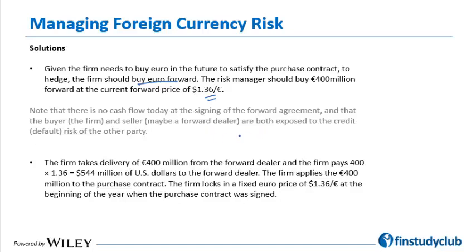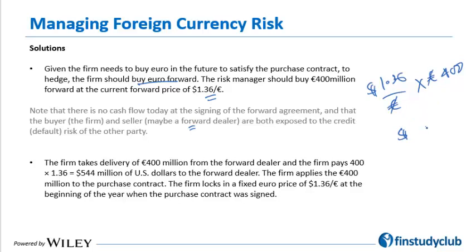Zippy, which is buying euro, and the forward dealer selling euro to Zippy are both exposed to counterparty credit risk, which exists in a forward contract. In terms of cash flows, the firm takes delivery of 400 million euro and pays 400 million into 1.36 dollar per euro — the agreed rate — which translates into 544 million dollars. The firm locks in the fixed euro price of 1.36 dollar per euro.